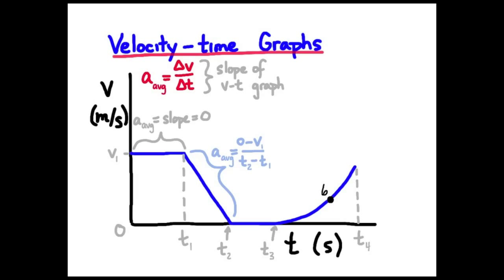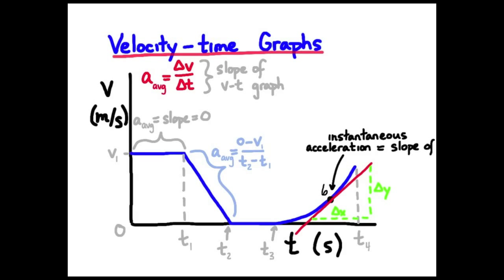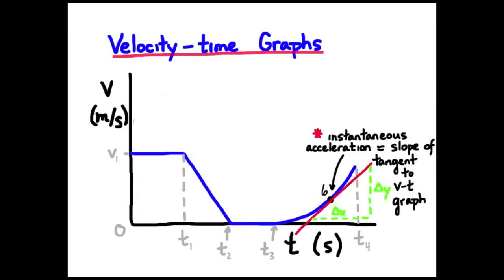But what happens where my slope is not constant? What is the acceleration at the point labeled six? To get the instantaneous value, we make a tangent line shown in red, and we measure the slope of that tangent line, with a construction line shown in light green. Delta V over delta T gives us the instantaneous acceleration — that is the slope of the tangent to the VT curve.